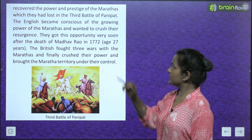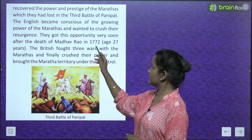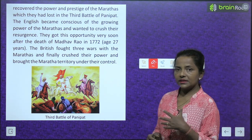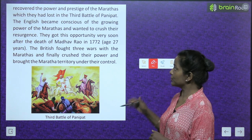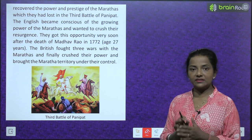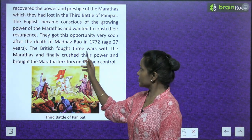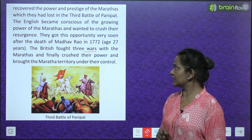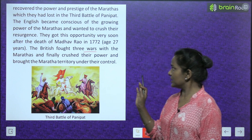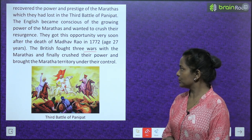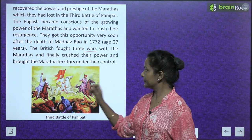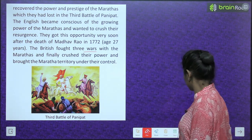The British got the opportunity after the death of Madhav Rao in 1772 at just 27 years of age. The British fought three wars with the Marathas and finally crushed their power, bringing the Maratha territory under their control.